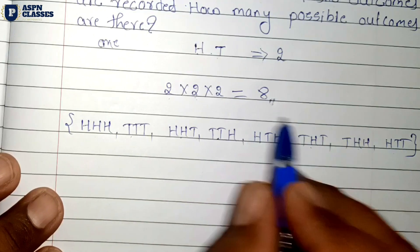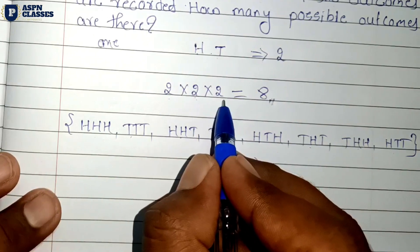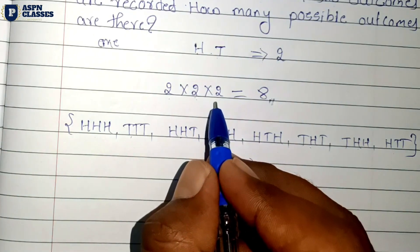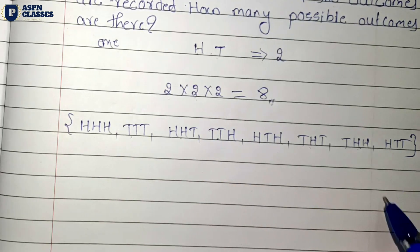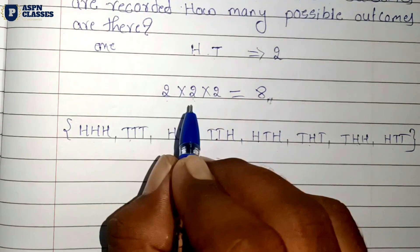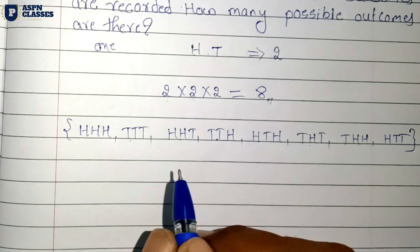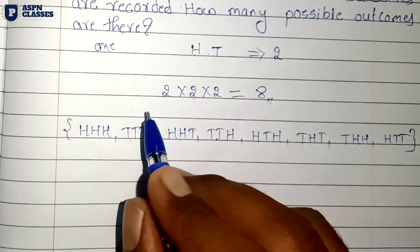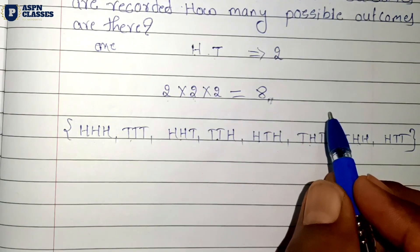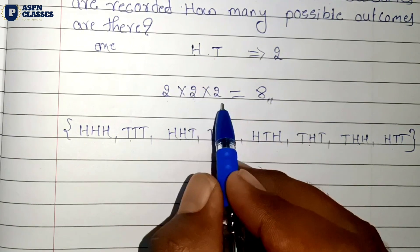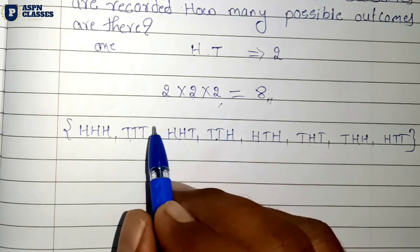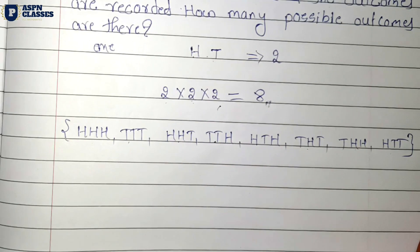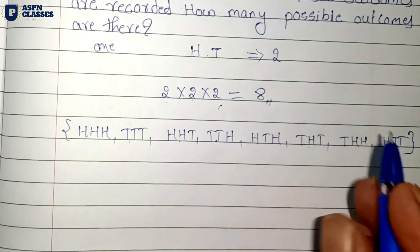By the multiplication principle: 2 into 2 into 2 equals 8. The answer is 8 possible outcomes.